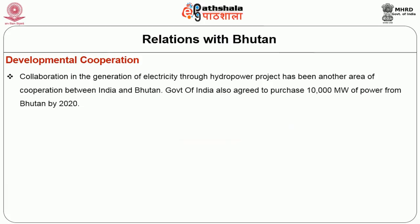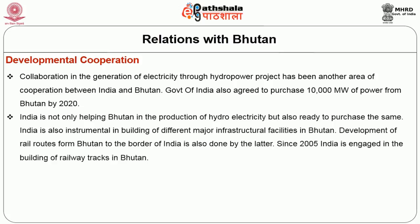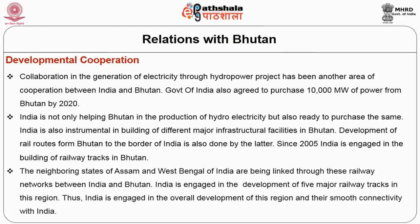Collaboration in the generation of electricity through hydropower projects has been another area of cooperation. The Government of India agreed to purchase 10,000 MW of power from Bhutan by 2020. Thus India is not only helping Bhutan in the production of hydroelectricity but also ready to purchase it. India is also instrumental in building major infrastructural facilities in Bhutan. Since 2005, India has been building railway tracks in Bhutan, linking the neighbouring states of Assam and West Bengal through these railway networks, and is engaged in the development of five major railway tracks in this region.